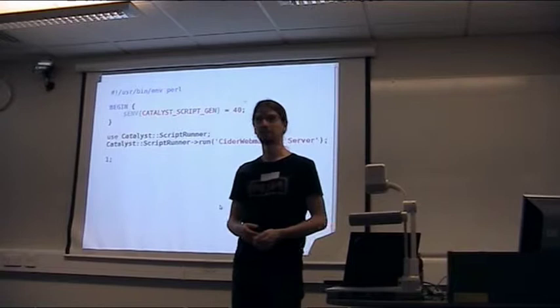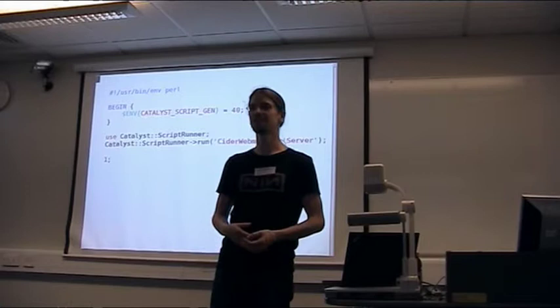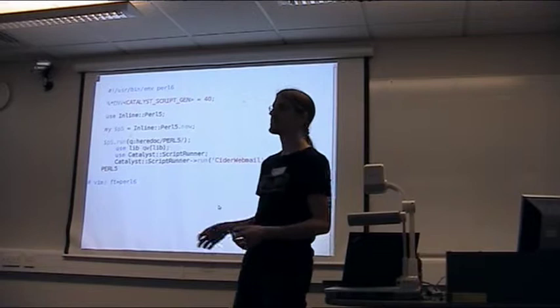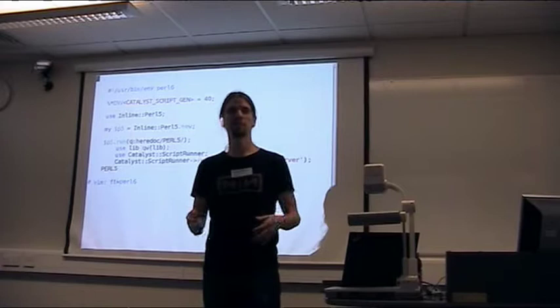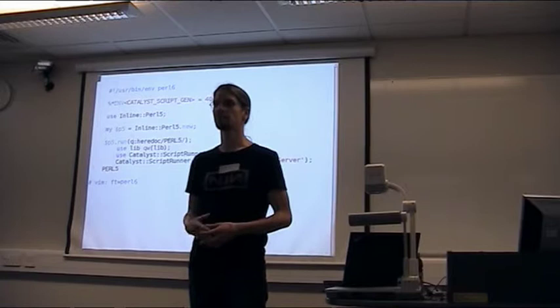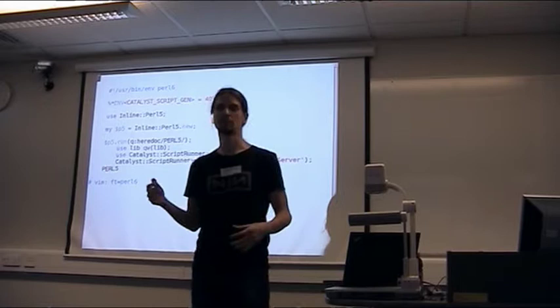The script is fairly simple. In essence, it's just loading a module and calling a method which then goes on to do the real work. So how would this look in Perl 6? It could look like this: change the Perl to Perl 6 in the shebang line, translate the environment variable to slightly different syntax, load Inline Perl 5, create a P5 object representing the Perl 5 interpreter, and call its run method, giving it a block of Perl 5 code in the form of a string.